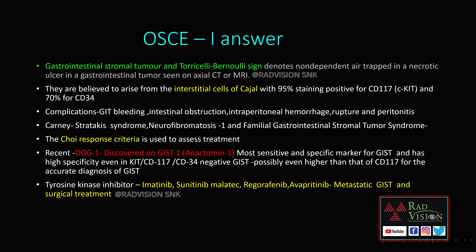The sign seen here is called the Stavorins-Bernoulli sign, which denotes non-dependent air trapped in the necrotic ulcer in GIST, seen typically on axial CT or MRI. The important precursor cells which give rise to GIST are believed to be the interstitial cells of Cajal.